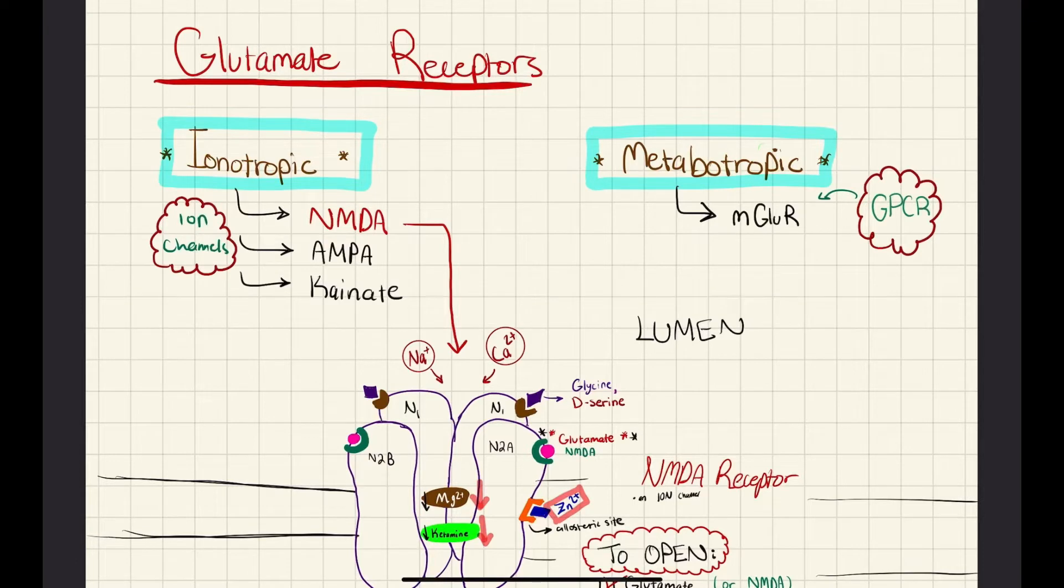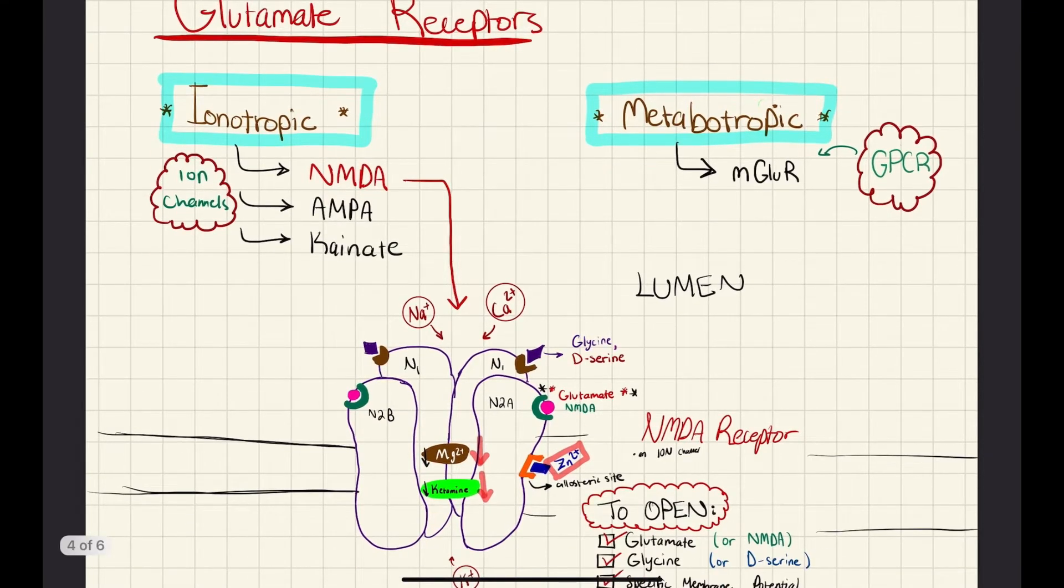Okay, so we'll be looking at glutamate a bit more closely and looking at some of its receptors. Now, there's two broad classes, really. There is your ionotropic receptors, which are ion channels. And then you have your metabotropic receptors, which are GPCRs. Now, metabotropic receptors, there's really only one of them we look at, which is mGluR. And then for ion channels, there's kainate channels, AMPA receptors. And then NMDA is the one we look at most closely, the NMDA receptor.